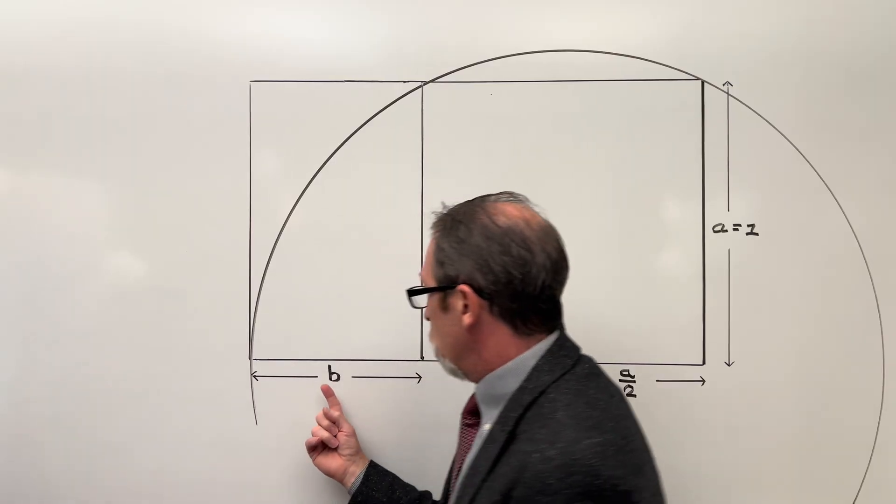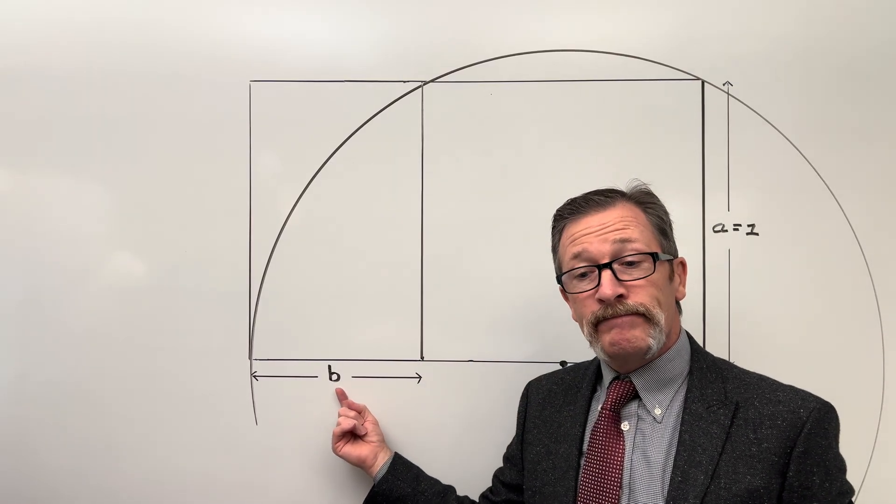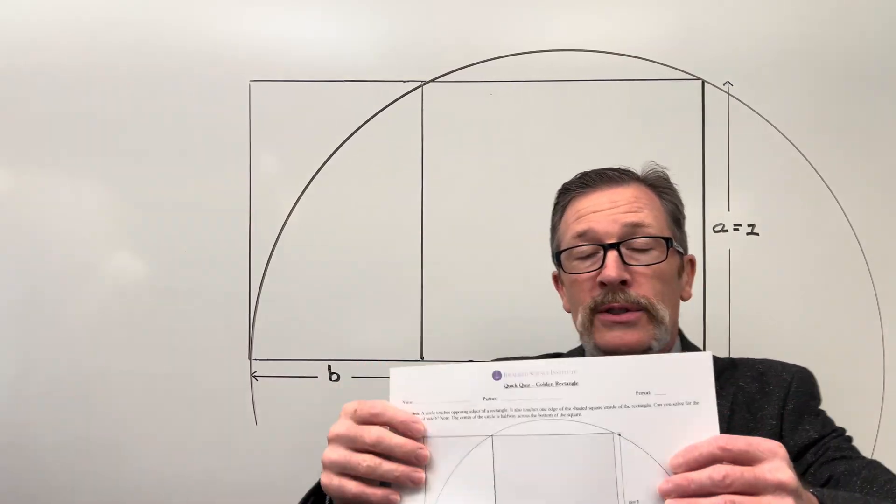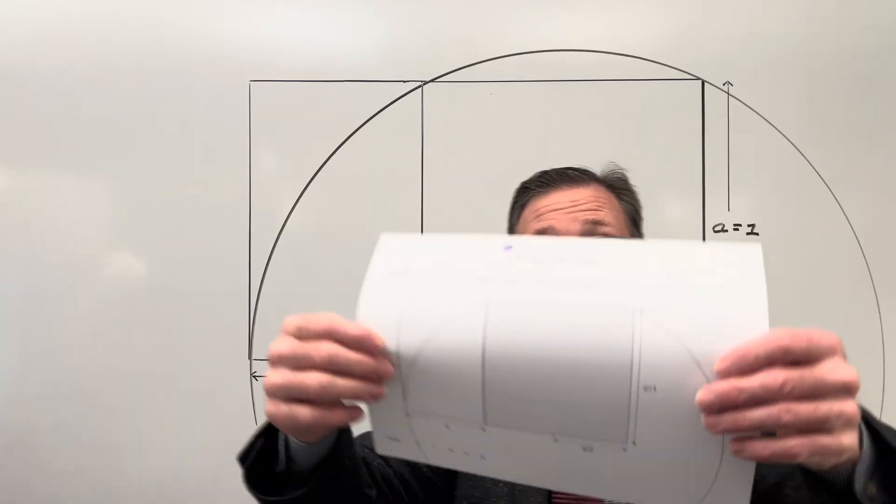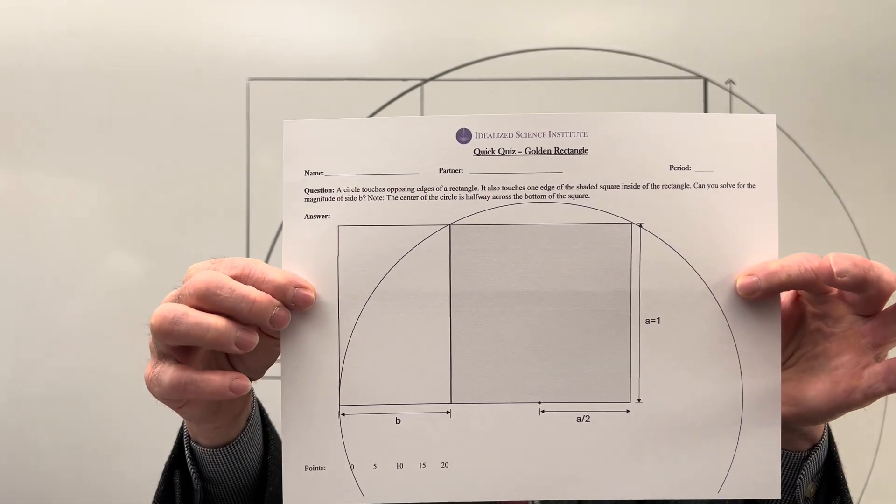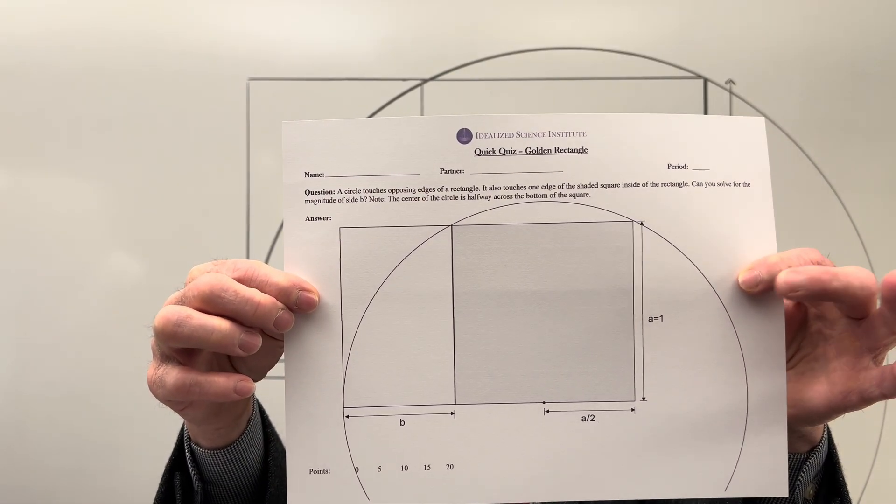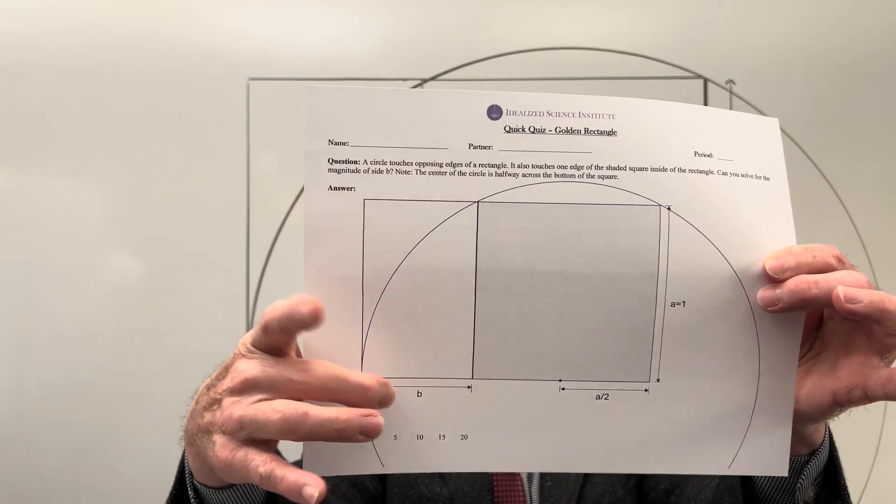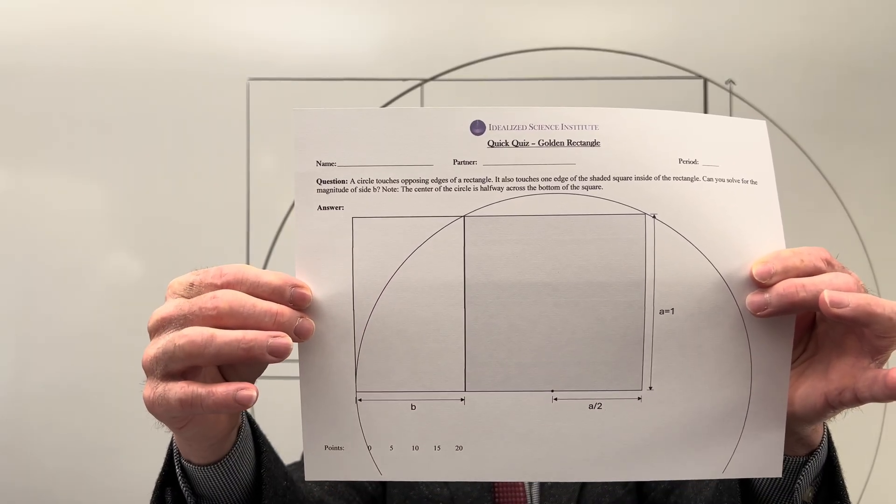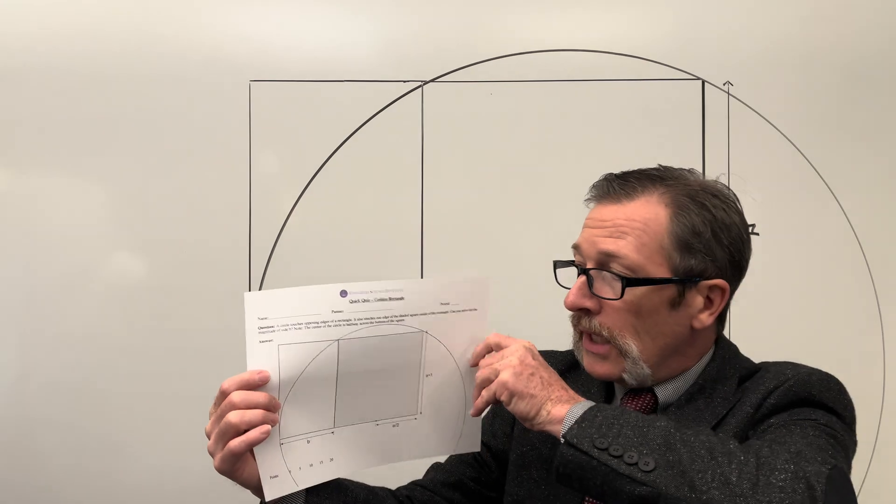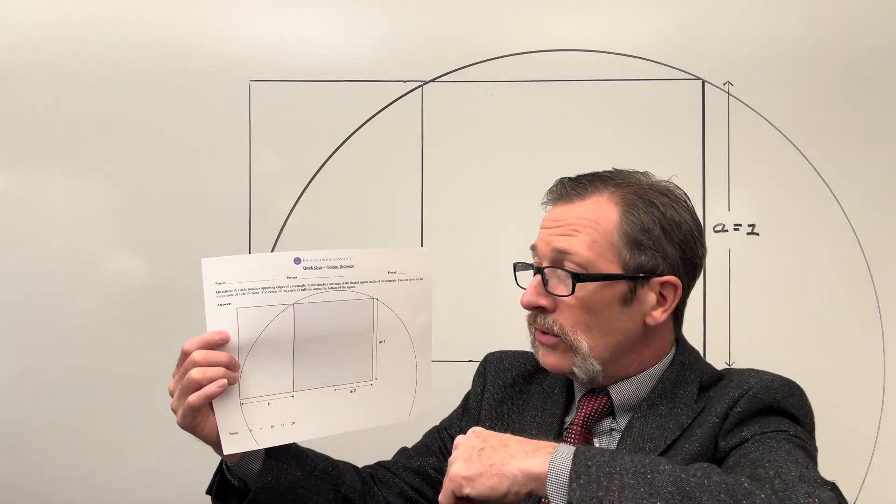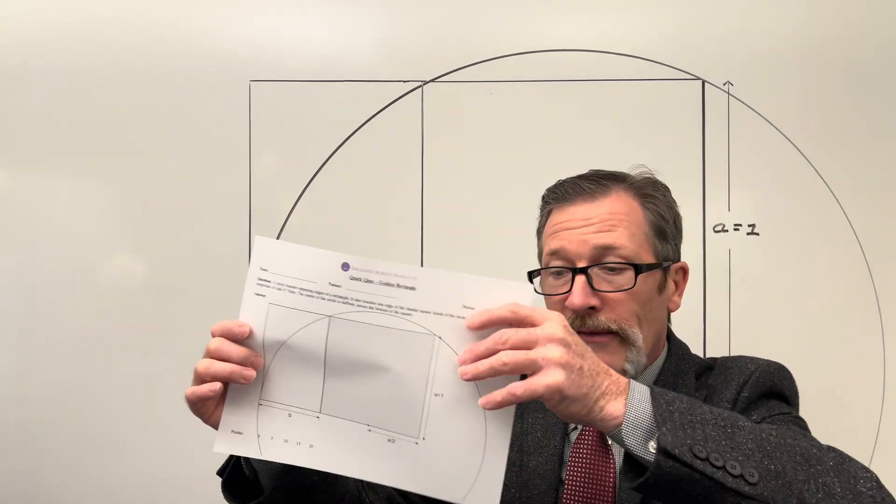Our goal today is to find B. This is what the quiz looks like. It's going to look identical to this but on a paper it looks like this. Our goal is to solve for side B. As always have your students mark as much as they need to and then when they're done have them mark their confidence.